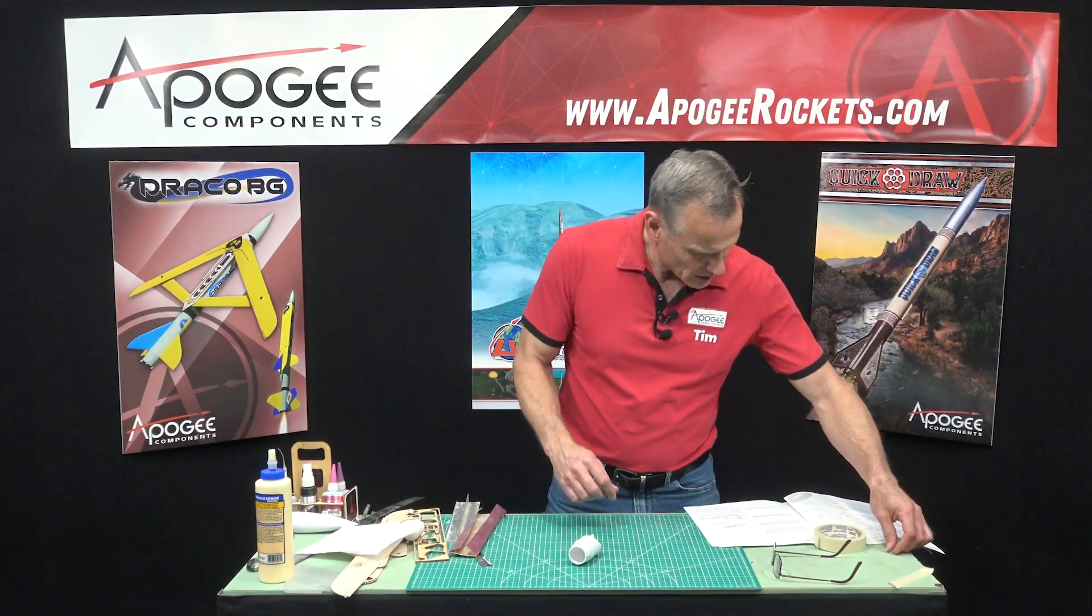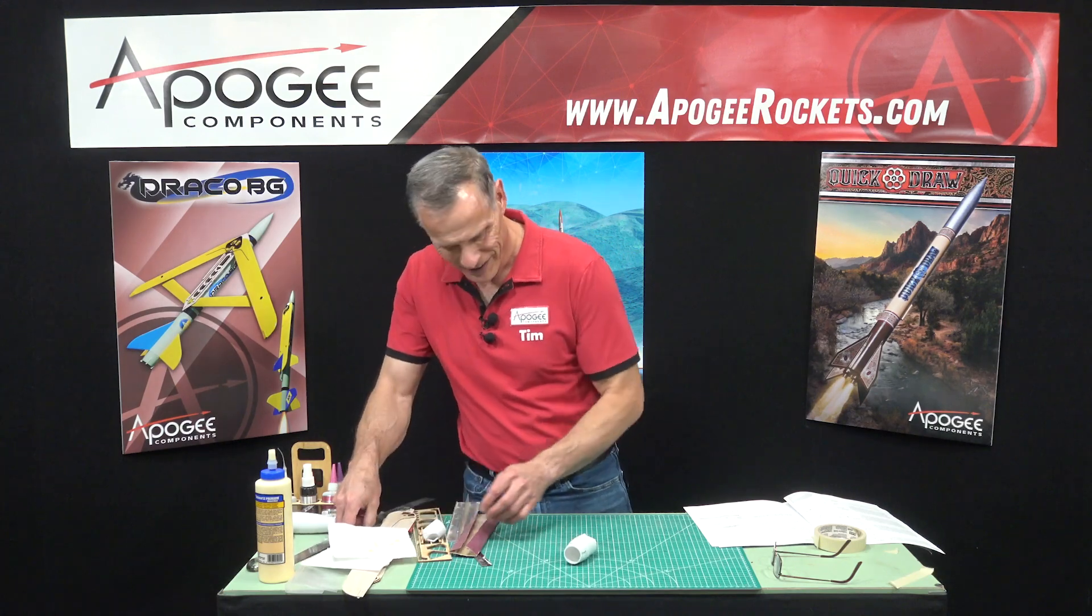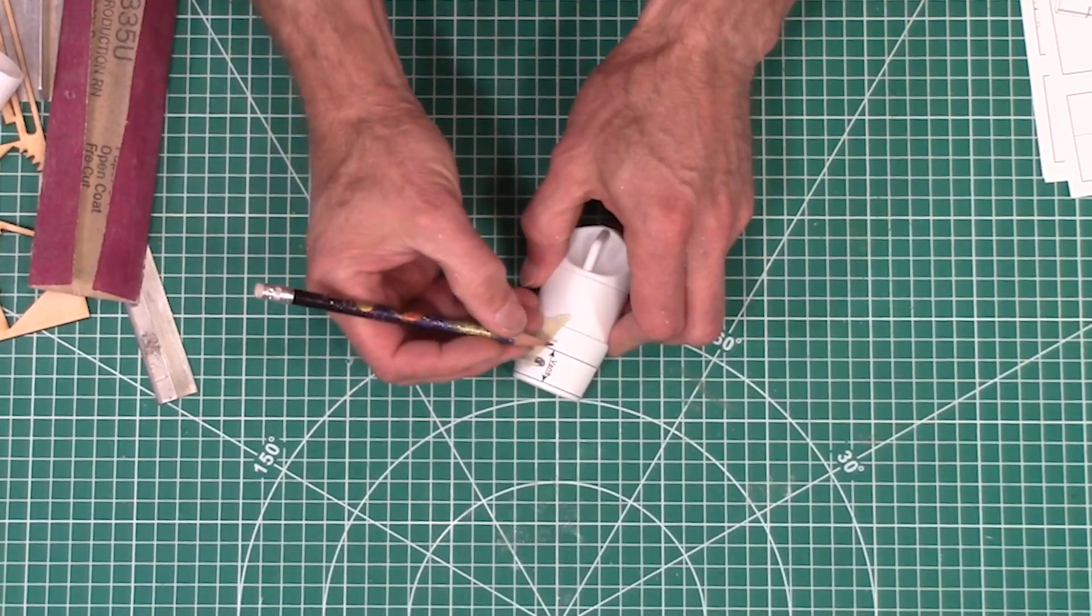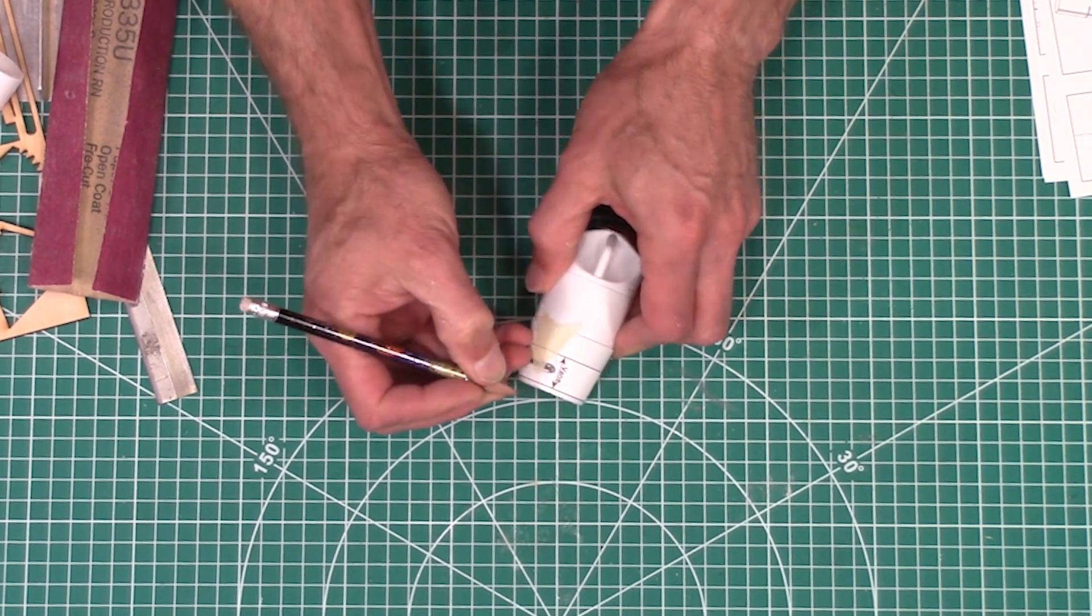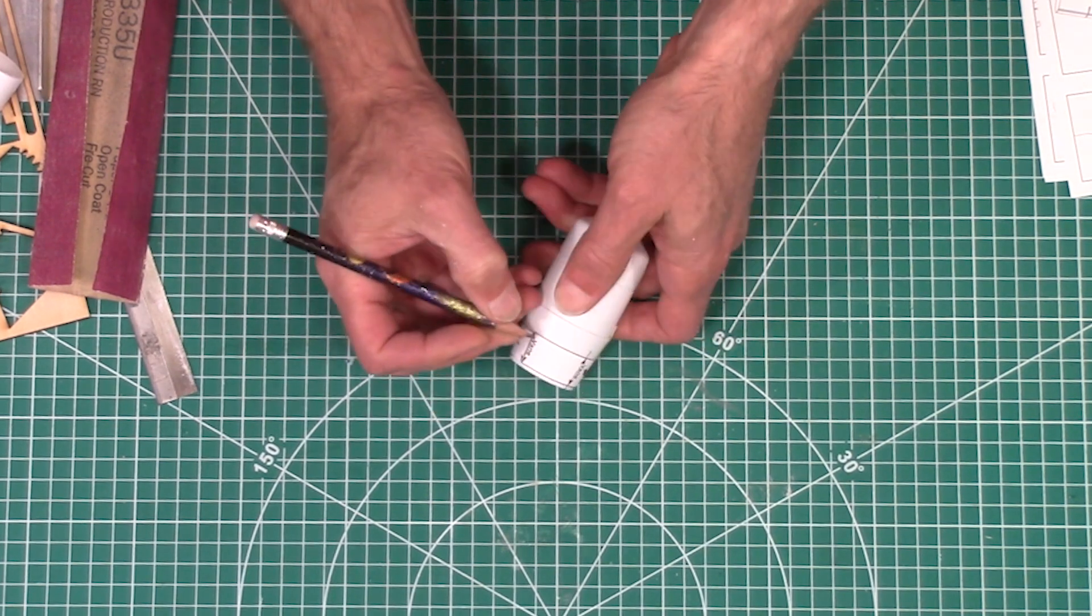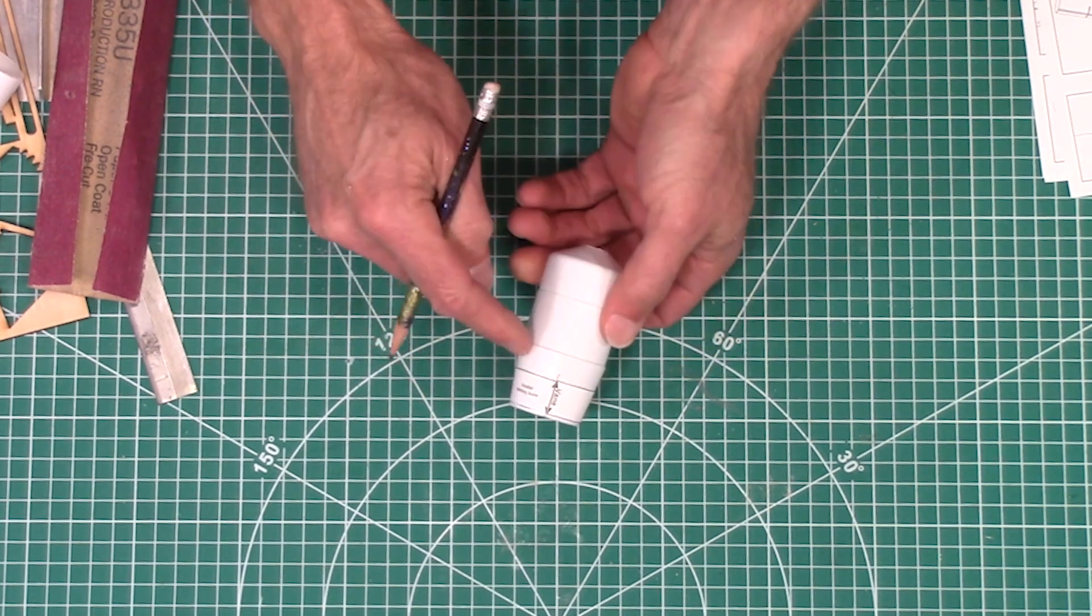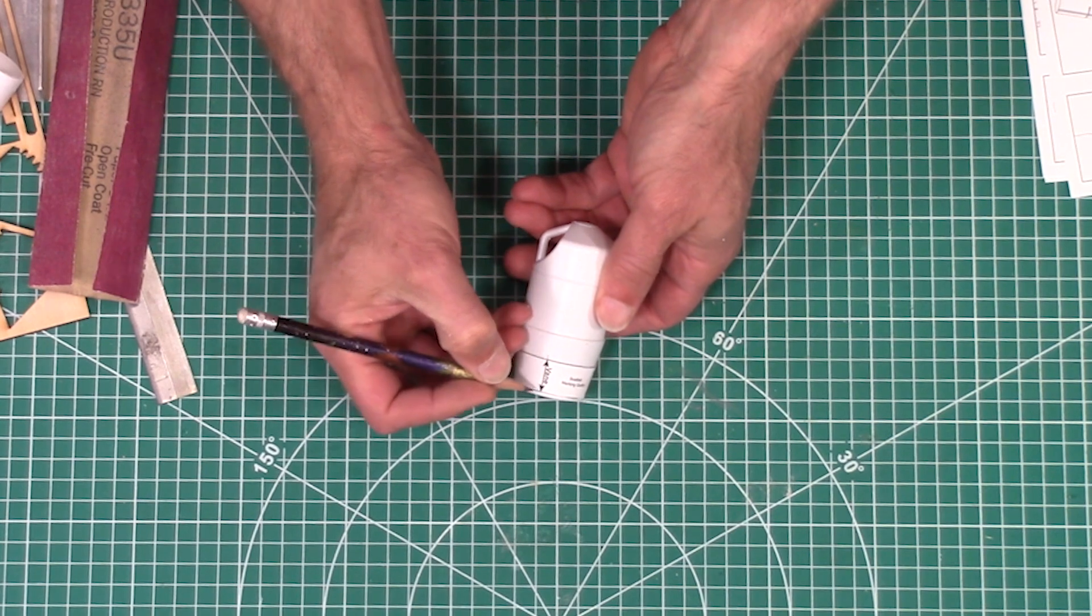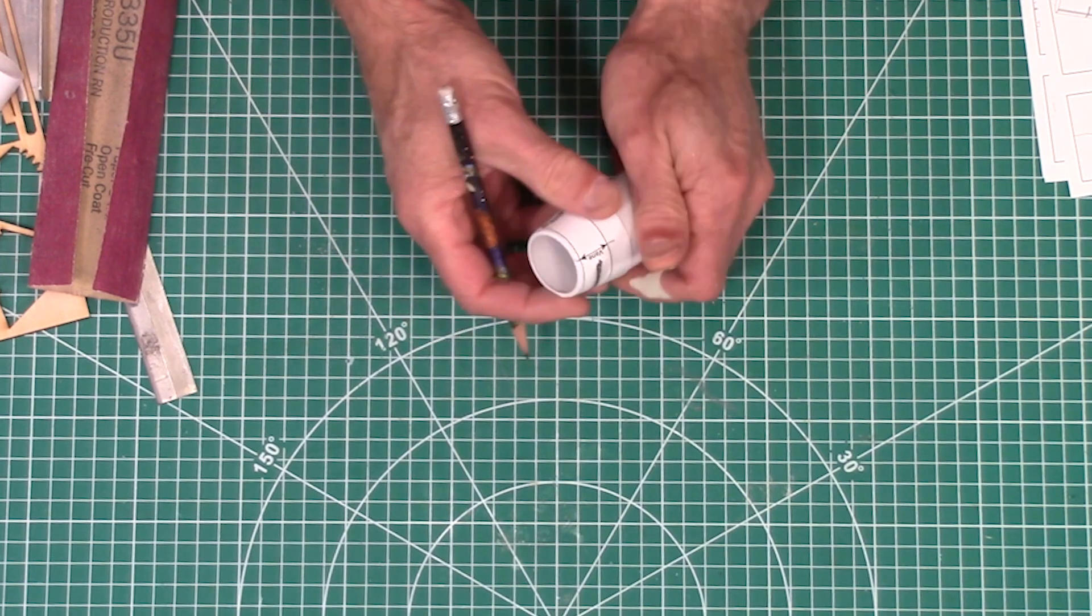And then I'm going to take a pen, pencil, remember always use a pencil, and I want to mark each of the lines. Now the one with the seam line is pretty obvious. But the other two that are 90 degrees apart from it, those we want to mark. So this one's a seam line because it's on the opposite side of that. And then here is one that's in the middle.